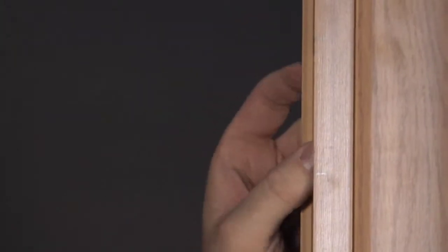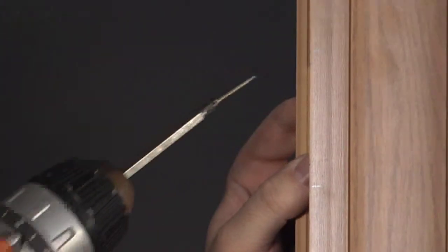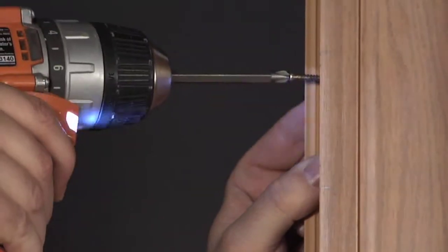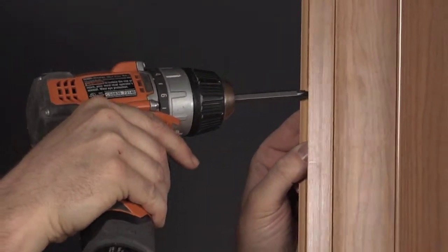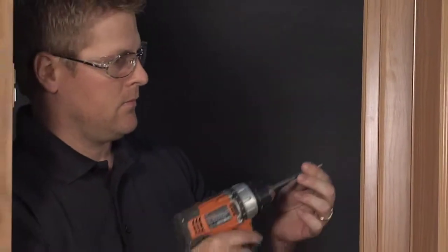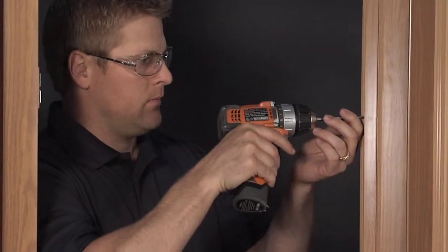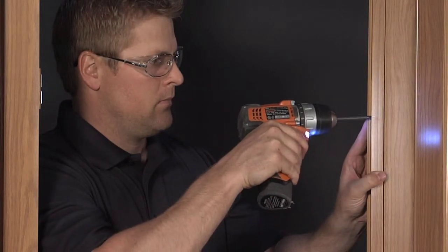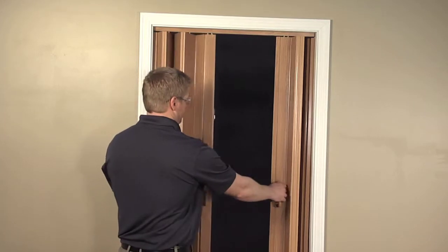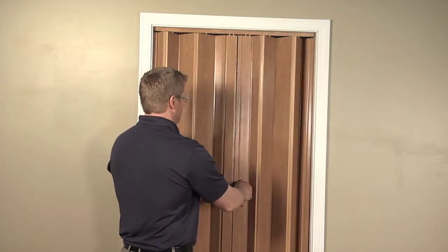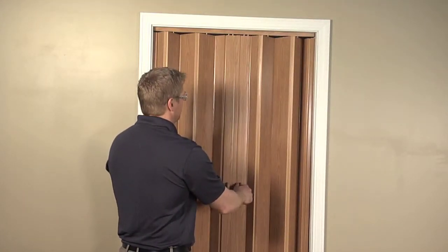Align your striker plate with your marked position. Using the drill, install the magnetic latch striker plate in the channel. Repeat this for the second magnet. Your doors are ready for use.